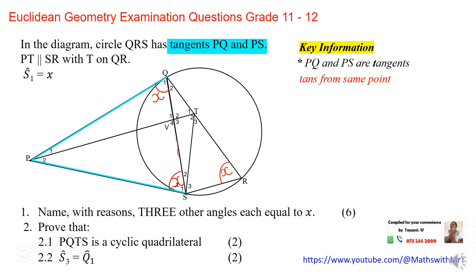Let's proceed. We are told that line PT is parallel to line SR. Now you look at your diagram, find line SR and find line PT. Those two lines are parallel to each other.